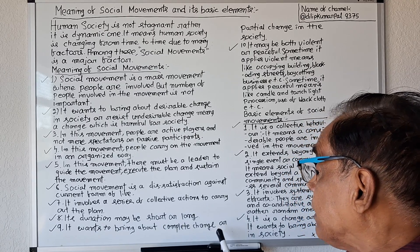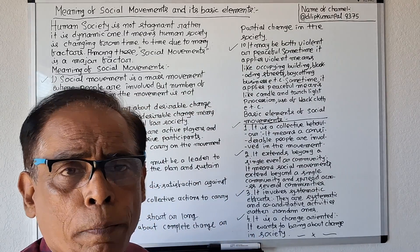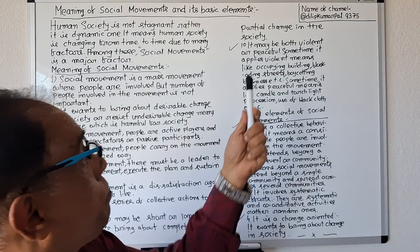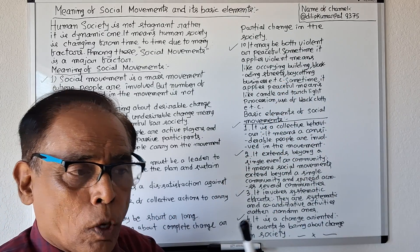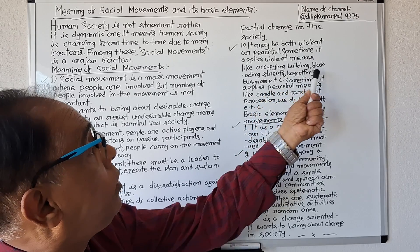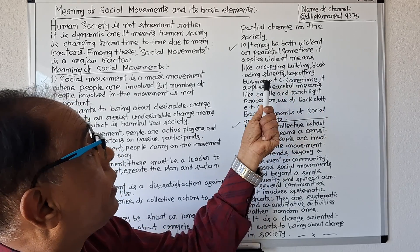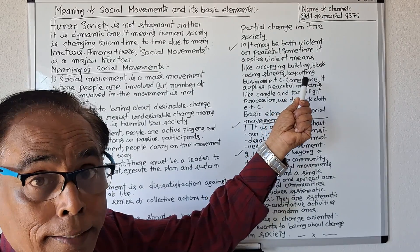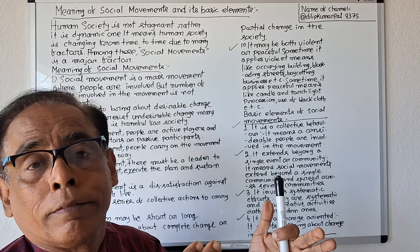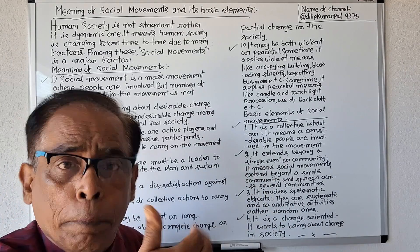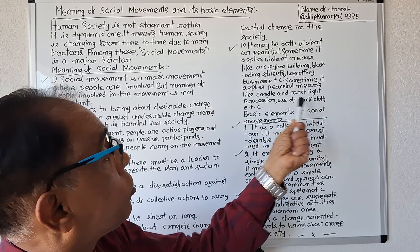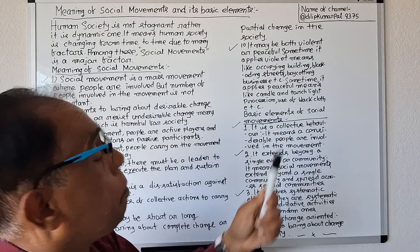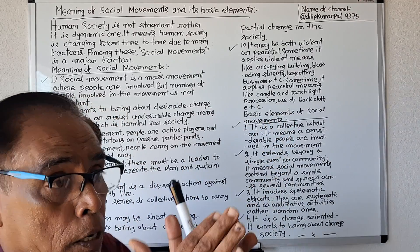Number nine: it wants to bring about complete change or partial change in society. Finally, number ten: it may be both violent or peaceful. It applies violent means like occupying buildings, blockading streets, and boycotting business. Sometimes it applies peaceful means like candlelight processions, torchlight processions, and use of black cloth. These are the main principles of social movements.